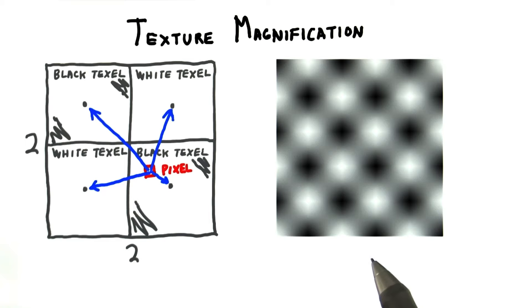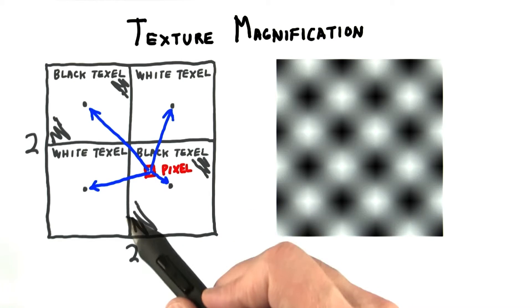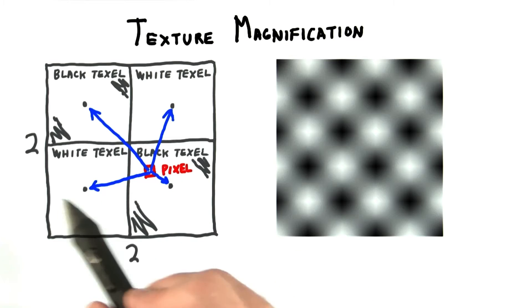If you turn on bilinear interpolation, this is what you get. That's definitely too much of a good thing. You'd like blurring along the edges of the squares, but not across the whole texture.